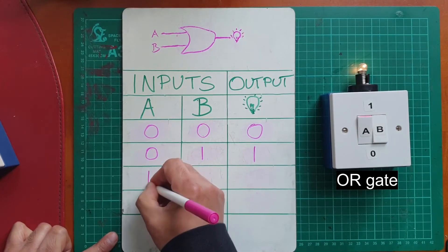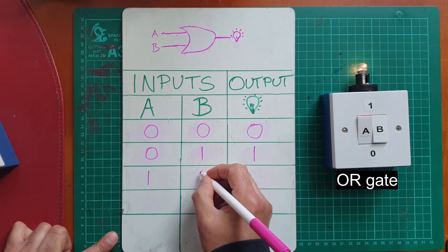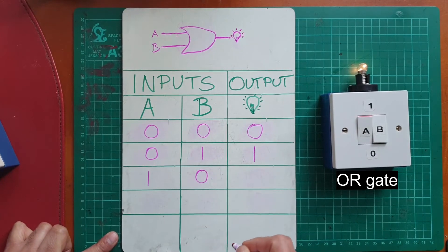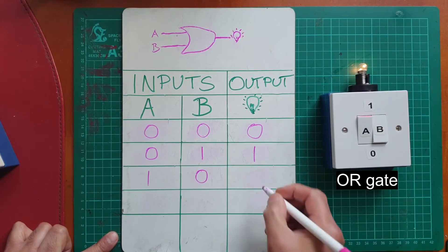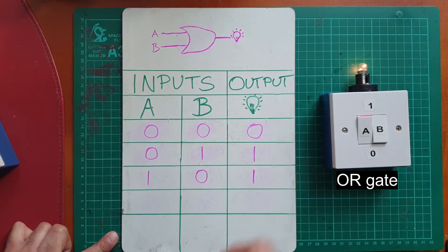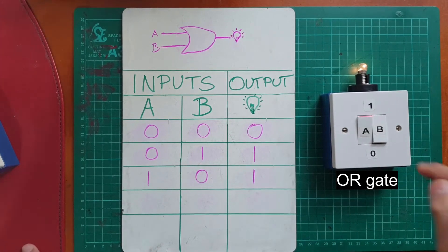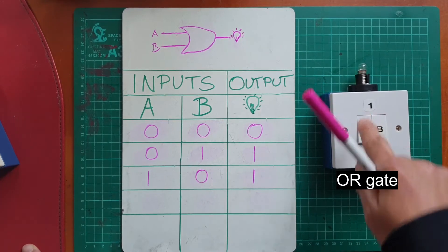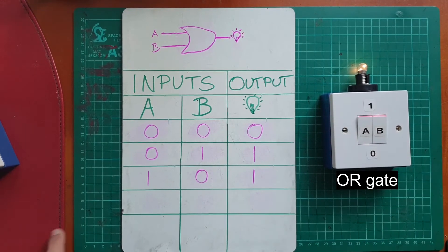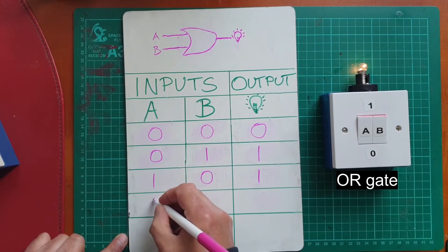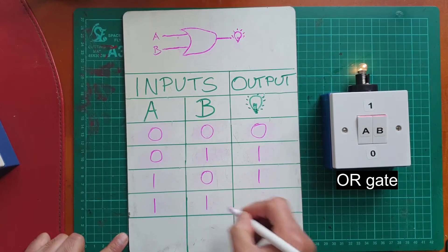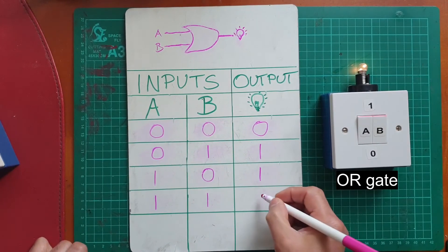So again, that's on for A, off for B, light bulb's on, so we insert a one in the output. And the last permutation is A on and B on. So A on, B on, output on.